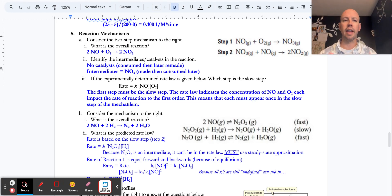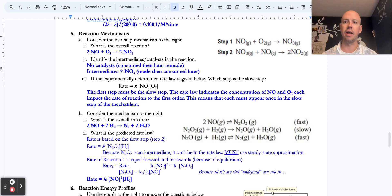All right, so we're looking at what a reaction mechanism is or what we could be asked about that. Consider the two-step mechanism to the right, showing that NO, nitrogen monoxide, and oxygen make NO3, not nitrate, just nitrogen trioxide.